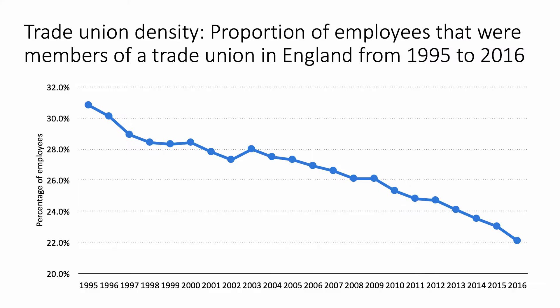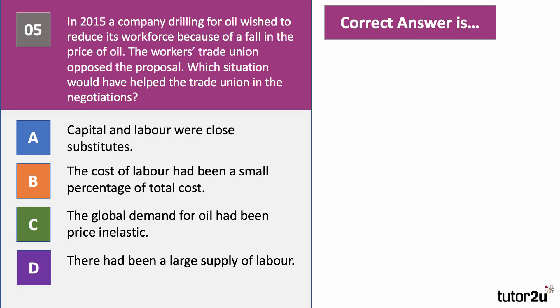Before question five, a bit of data: trade unions have become less important in the labour market. In 2016 in England, the proportion of workers who are members of a union dipped to 22% — less than one worker in four is a member of a union. Question five: in 2015, a company drilling for oil wished to cut its workforce because of a fall in the price of oil. The trade union opposed the proposal. Which situation would have helped the trade union in those negotiations?